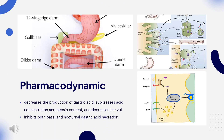Pharmacodynamics: Famotidine decreases the production of gastric acid, suppresses acid concentration and pepsin content, and decreases the volume of gastric secretion. Famotidine inhibits both basal and nocturnal gastric acid secretion, as well as acid secretion stimulated by food, caffeine, insulin, and pentagastrin. Famotidine has a dose-dependent therapeutic action, with the highest dose having the most extended duration of action and the highest inhibitory effect on gastric acid secretion.